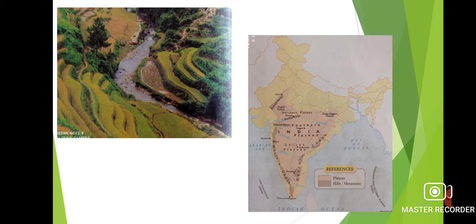The Central Highlands consist of two plateaus: the Malwa Plateau and the Chhota Nagpur Plateau. The fine black soil of the Malwa Plateau is good for growing cotton, sugarcane and oilseeds. The Chhota Nagpur Plateau is rich in minerals such as coal, iron, manganese, bauxite and mica.